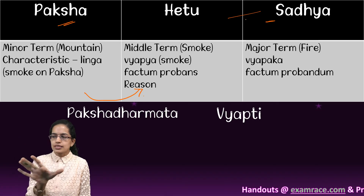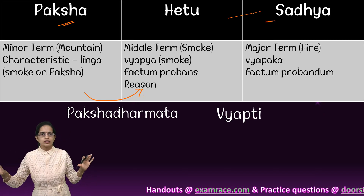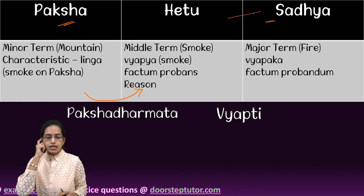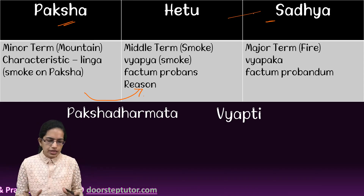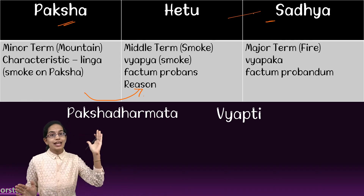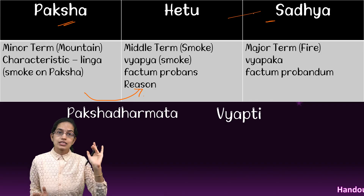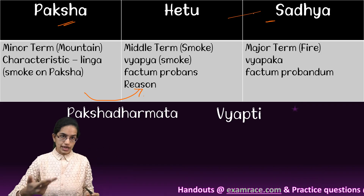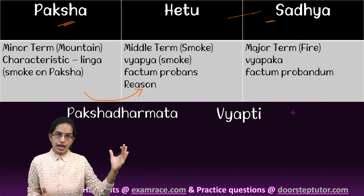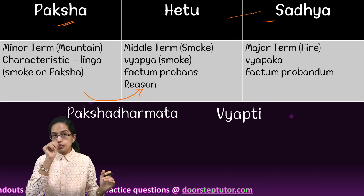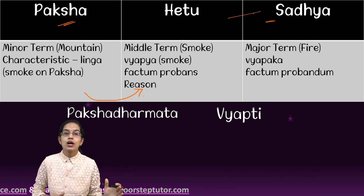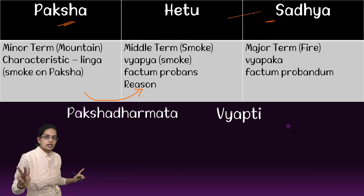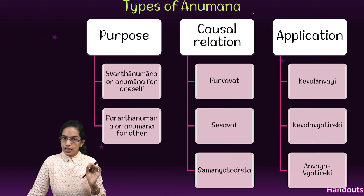The relation between the paksh and the sadhya where hetu and sadhya are related is known as paramsa. So that is the basic understanding of paksh, hetu and sadhya. A simple example: the hill has smoke, wherever there is smoke there is fire, so the hill has fire. Or conversely, the hill has fire, wherever there is fire there is smoke, so the hill is smoky. This is the relation between the terms.